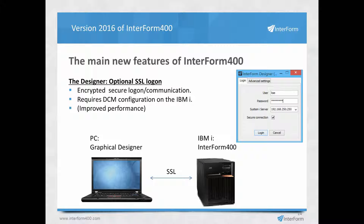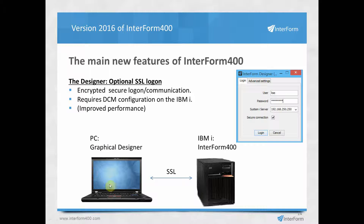Moving to the core Interform 400 changes: the graphical designer now supports SSL encryption for data sent between the designer and the host. This requires configuration in the Digital Certificate Manager on the IBM i, after which you simply activate the secure connection at sign-on. Additionally, we have improved designer performance by allowing it to use up to one gigabyte of RAM, which simply makes the designer faster.